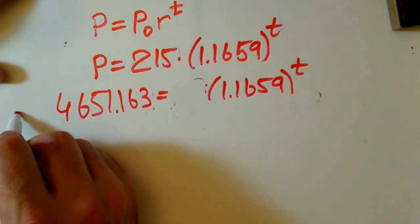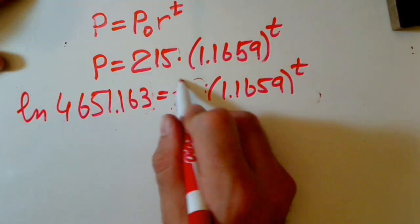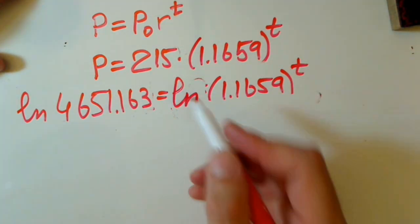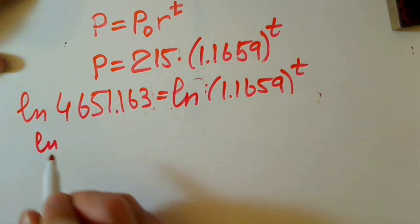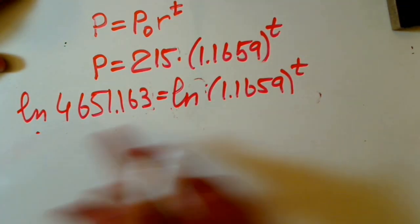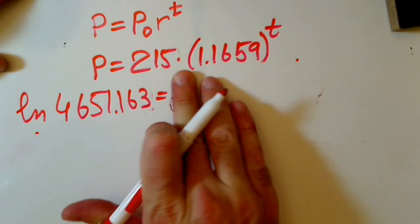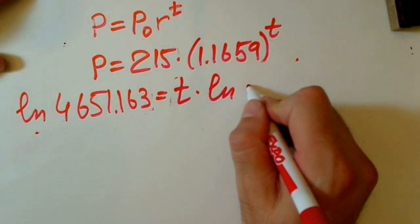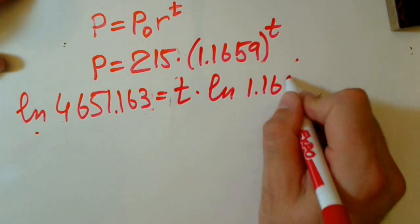And now, to solve it again, take natural log on both sides, and T goes up front again. We have ln 1.1659. Now, to find T, we should divide both sides by ln 1.1659.